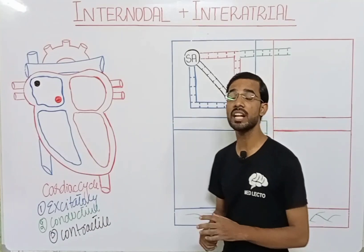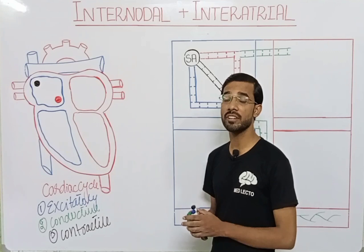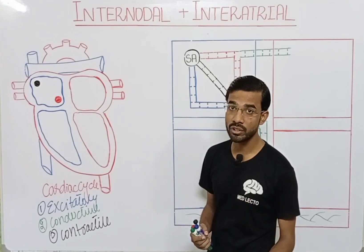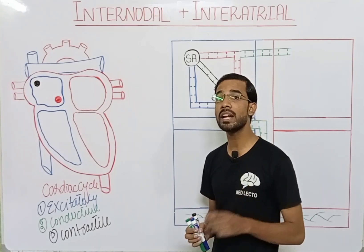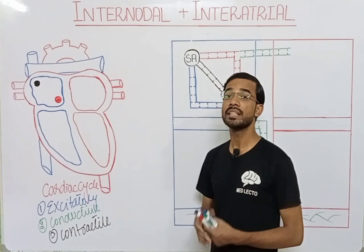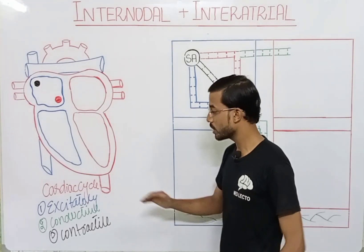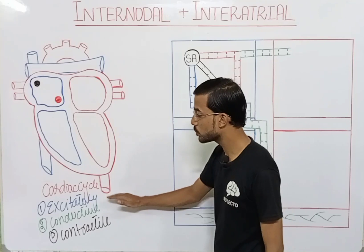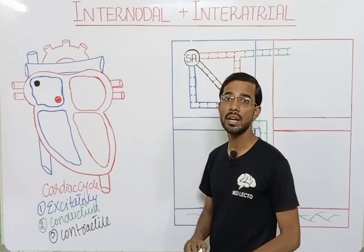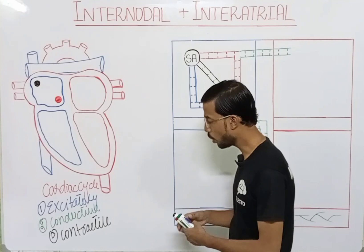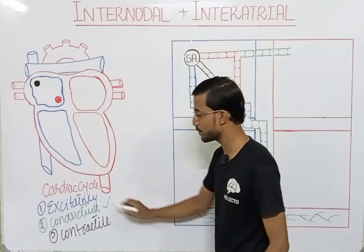The signal generates in the sinoatrial node. After its generation, it will travel to the atria and the ventricle of the heart, and after that the atria and the ventricle will start contracting. In this lecture we will discuss the conductive system.